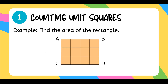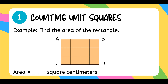Let's discuss first the first method in finding the area: counting unit squares. For example, find the area of a rectangle. So we have here a rectangle A, B, C, and D. We have divided the area into squares.